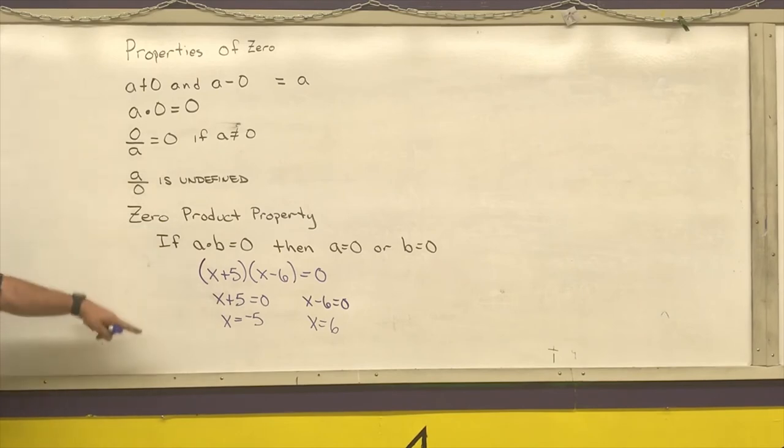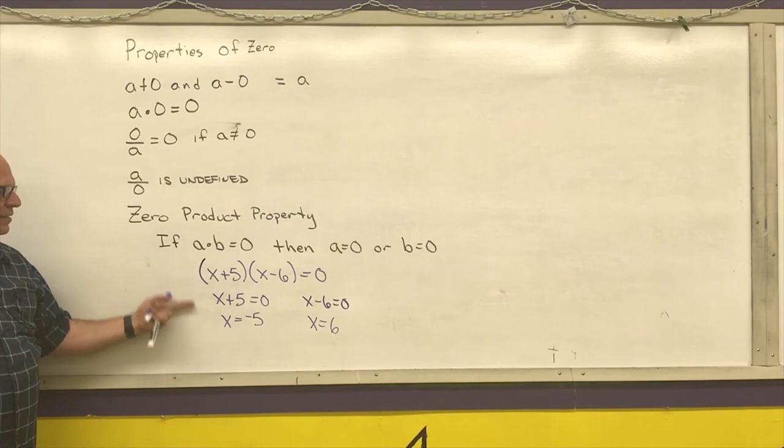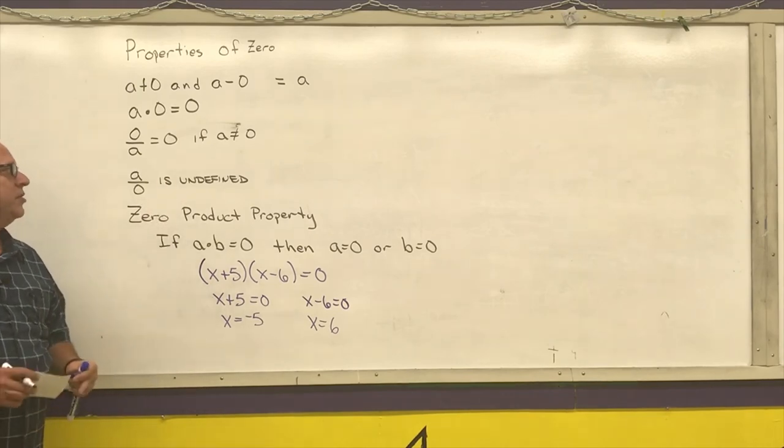So these are the five properties for eighth grade, algebra 1, and geometry. Make sure you have these written down. In algebra 1 and algebra 2 and beyond, this is where I get my multiple solutions from when I start to solve our polynomial equations.